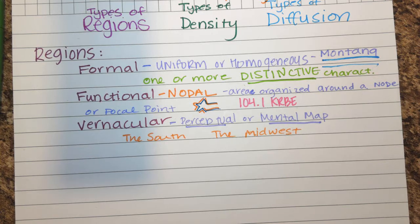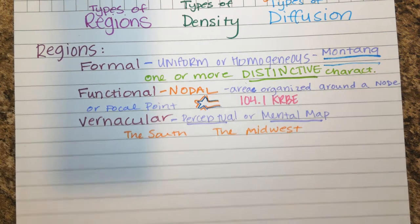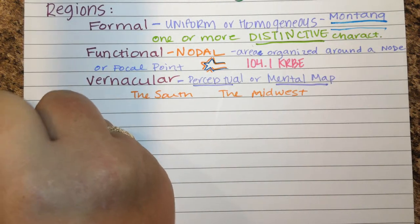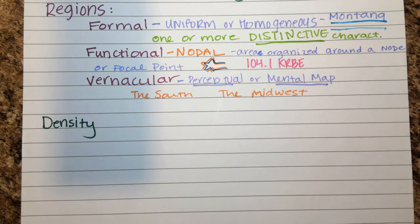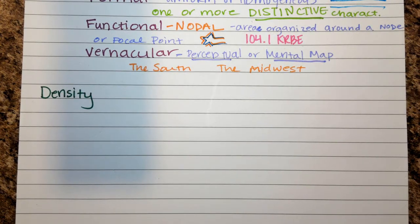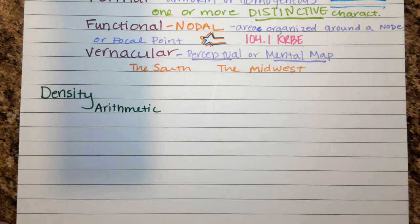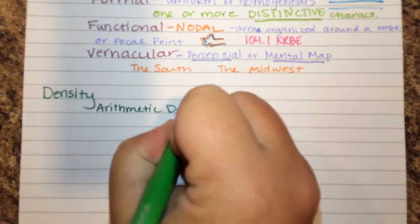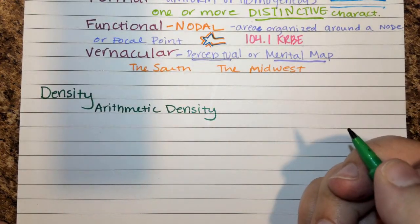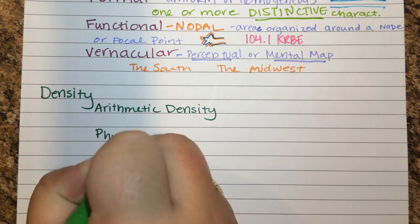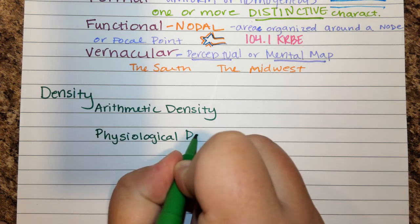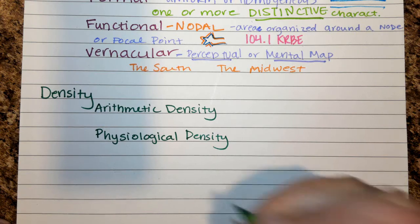Next, we're going to look at different types of density. Density is the frequency with which something occurs — how often does it show up in a certain area. There are three types: arithmetic density, physiological density, and agricultural density.